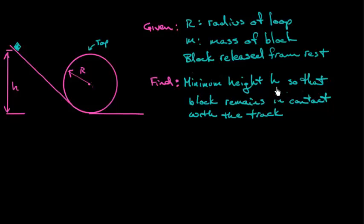What we want to do is find the minimum height h so that when we release the block at this height, it slides down and remains in contact with the track the entire way through. The wording of this problem is suggestive. It suggests that there's some minimum height, so that if we're above that height, it makes it all the way through the loop, and if we're below that height, it does not remain in contact. Perhaps it shoots off. That's what that's suggesting.